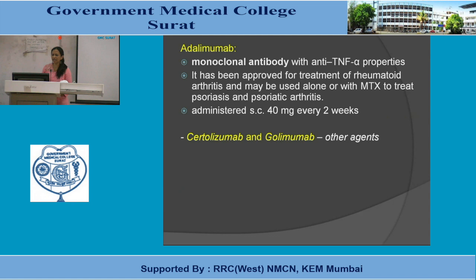Adalimumab is a monoclonal antibody with anti-TNF-alpha properties, approved for RA and used alone or with methotrexate. It is also indicated for psoriasis and psoriatic arthritis, administered subcutaneously at 40 mg every two weeks. Similar agents include certolizumab and golimumab.